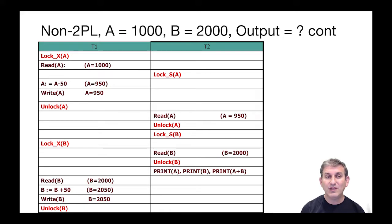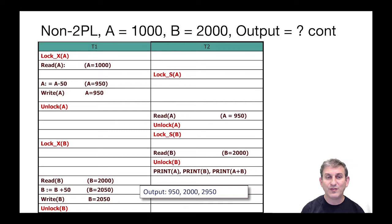T2 would like to get a shared lock on B and it succeeds. Meanwhile T1 is scheduled and tries to get an exclusive lock on B, which is not compatible with T2's shared lock, so T1 has to wait. T2 goes ahead and reads B and sees 2000, unlocks B, and prints A, B, and A plus B. At this point A is 950, B is 2000, and the sum is 2950 — somehow from T2's point of view we've lost fifty dollars.